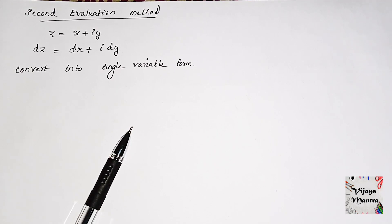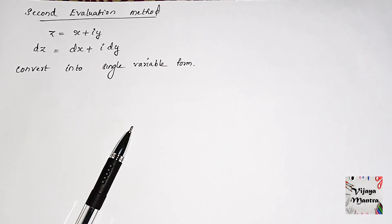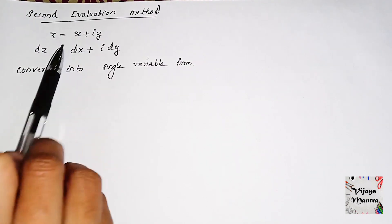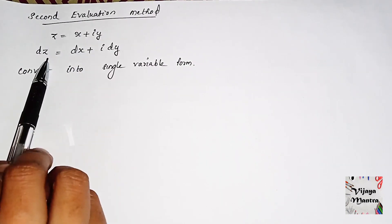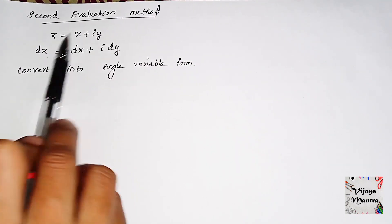In the second evaluation method, we are going to use the limit to the path sizing. We are going to use several variables. X, Y, Z are all mixed. We are going to use the integration of the single variables, and we are going to use the integration of Z. We will differentiate Z on the two sides.